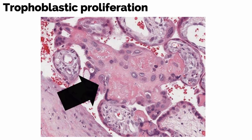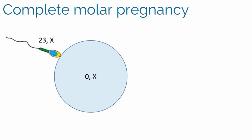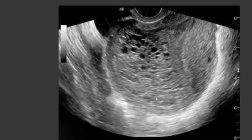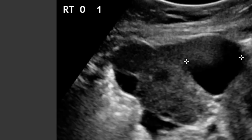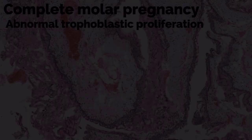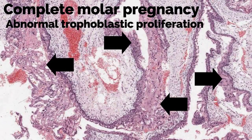In a complete molar pregnancy, the chromosomes of the ovum are absent or inactivated. Haploid sperm duplicates its own chromosomes after meiosis, a process known as androgenesis, so both chromosome sets are paternal. In 85–90% of cases, the karyotype is 46,XX. There is no fetal tissue, and the pregnancy grossly appears as clear vesicles or a cluster of grapes. On ultrasound, a snowstorm pattern is typical, and large ovarian cysts known as theca-lutein cysts may also be seen, developing with prolonged exposure to beta-HCG. Microscopically, these moles have swollen, enlarged hydropic villi with cistern formation — central cavitation within large villi — and abnormal trophoblastic proliferation surrounding the hydropic villi.